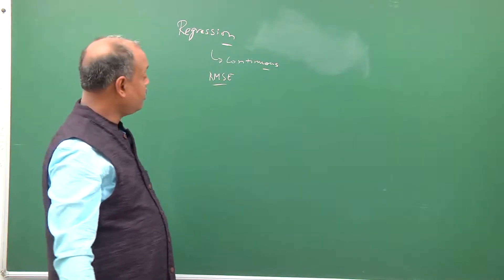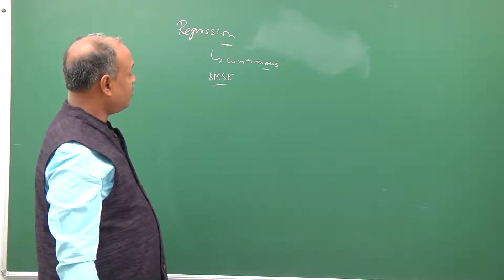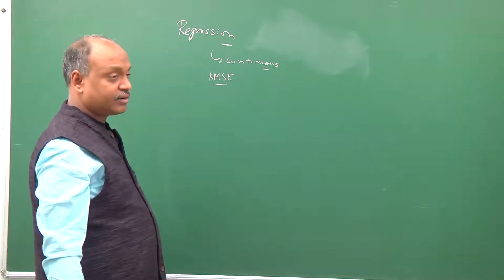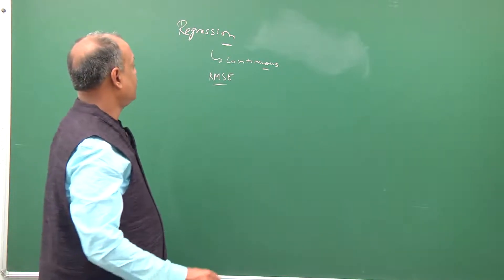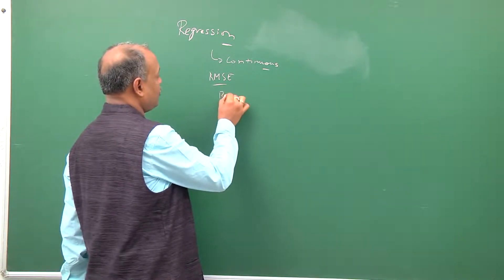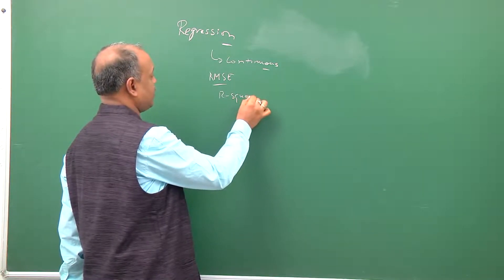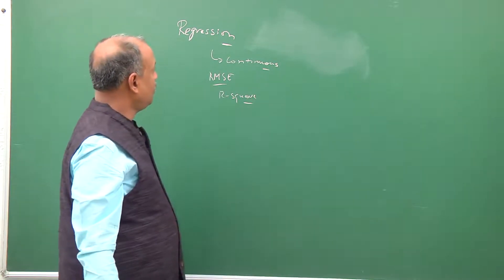This gives an idea of what is the average spread of the error, in terms of what is the average distance between the projected point and the actual point. We have normalized error functions like R-squared.